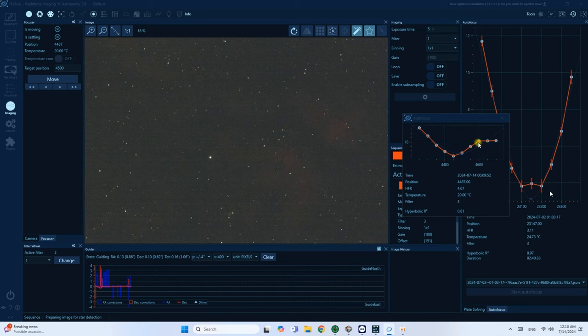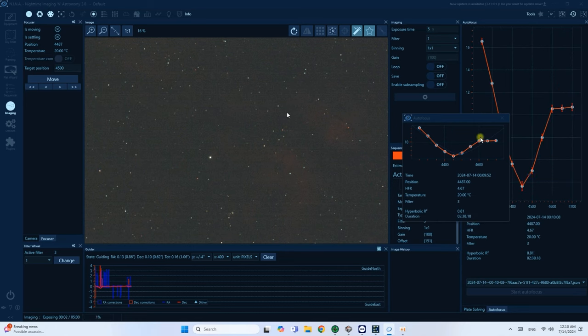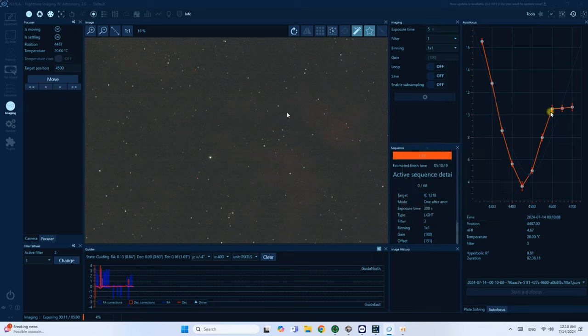Nina thinks that it moved the focuser like two times a hundred steps each time, but the actual measurement of stars didn't change. So it's likely because of the backlash problem as the motor didn't actually change the position of the focuser. Since there is the backlash, it results in the fact that Nina thinks that the image is in focus, but we can definitely say without a doubt that these stars and the image overall is not in focus.